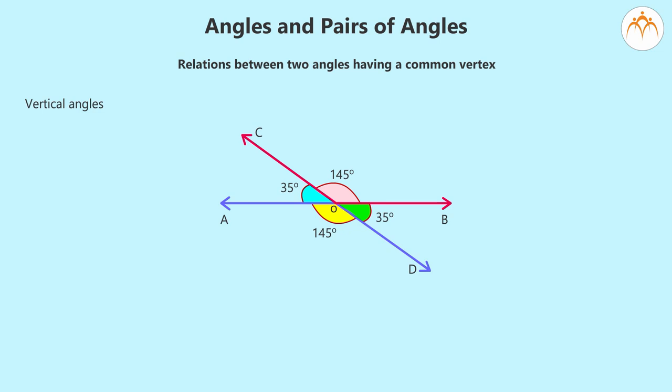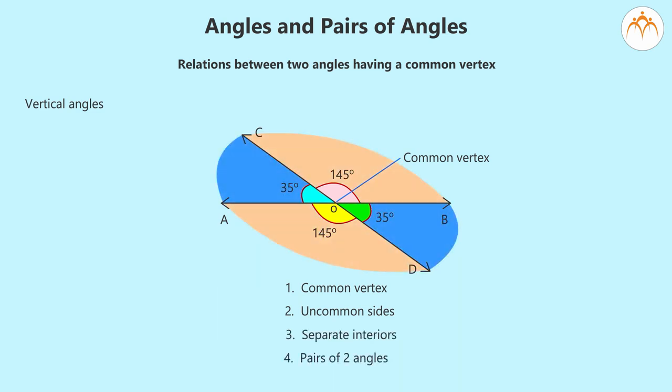These angles can be called vertical angles when they fulfill the following conditions. Common vertex, uncommon sides, separate interiors, pairs of two angles.